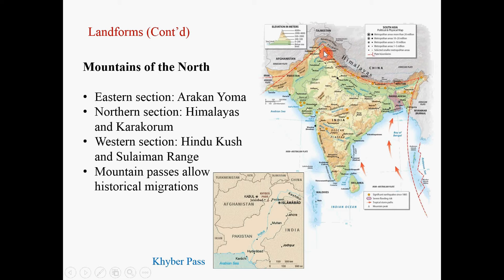In the western section, you have the Hindu Kush and the Sulaiman range. These mountains separate South Asia from Central Asia and Southwest Asia. Specifically, they separate Pakistan from Tajikistan, Afghanistan, and Iran.